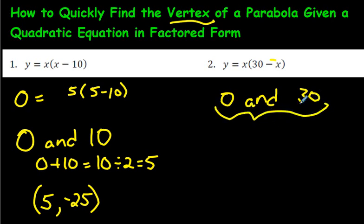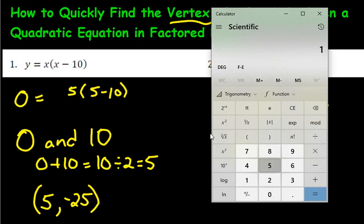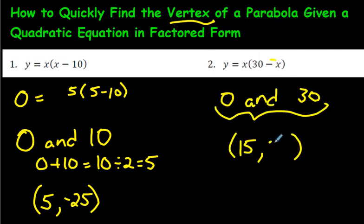If you added these two up to find the middle, zero plus thirty is thirty, divide by two, you get fifteen. So what would the y value be? Just plug fifteen in. Thirty minus fifteen is fifteen, and fifteen in the front, so fifteen times fifteen. And you get 225. So that is our vertex for this parabola.